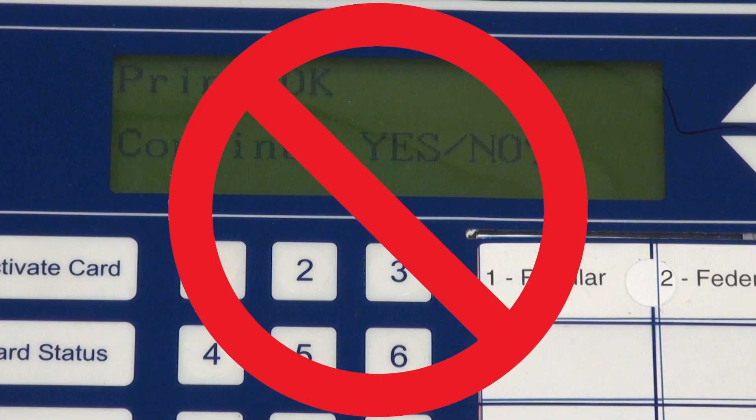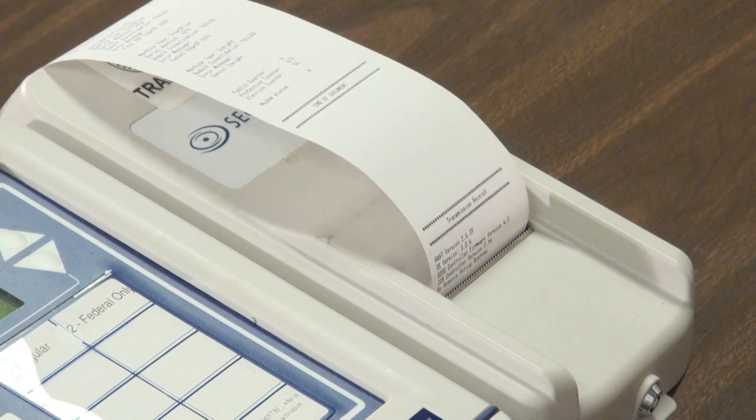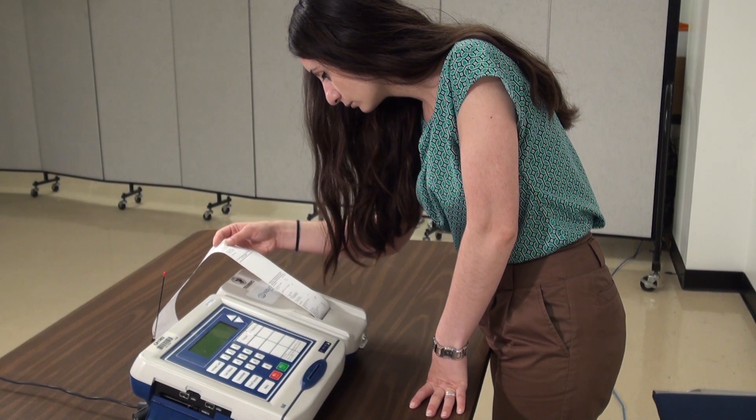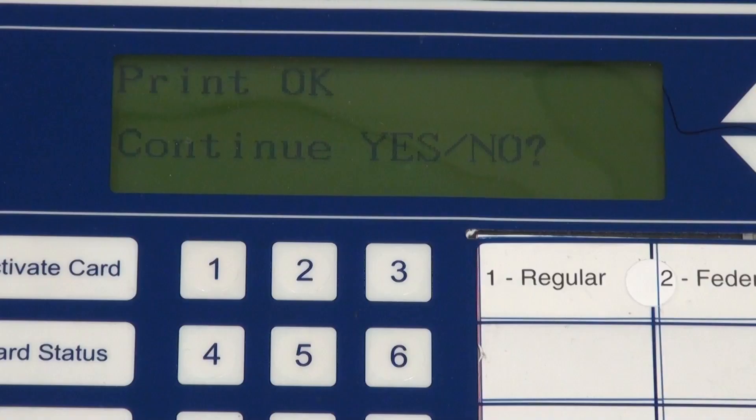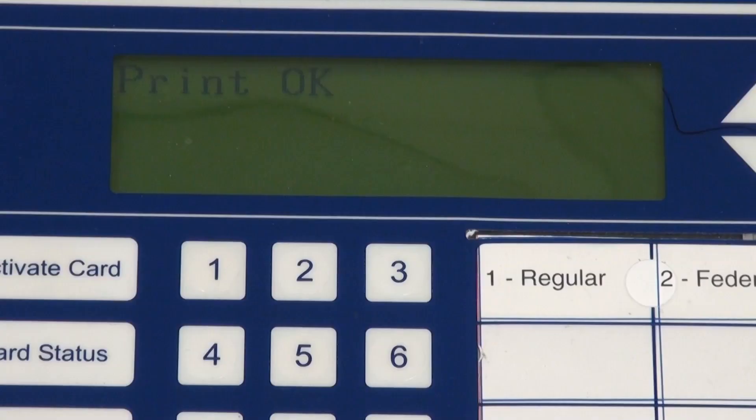Wait 20 to 30 seconds. Do not answer the yes-no question. The transmission tape will automatically print and the screen will read printing. Verify that the transmission tape reads Success. The screen will read print OK. Wait another 15 to 20 seconds. The results tape will automatically print. The screen will again read print OK.